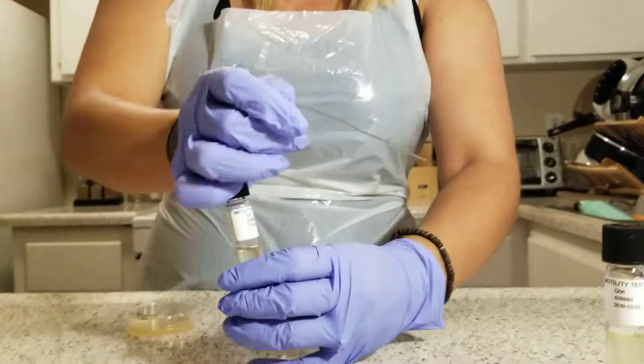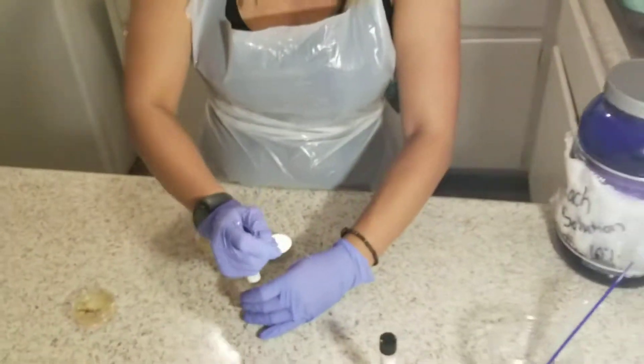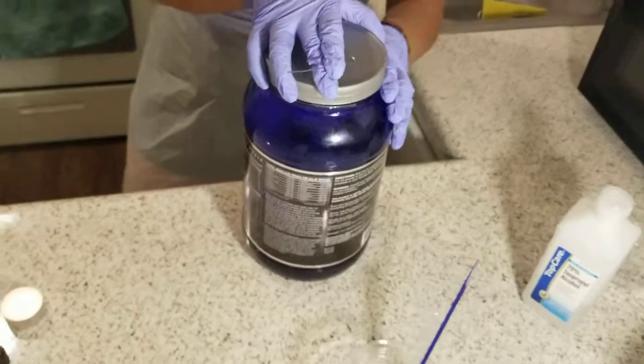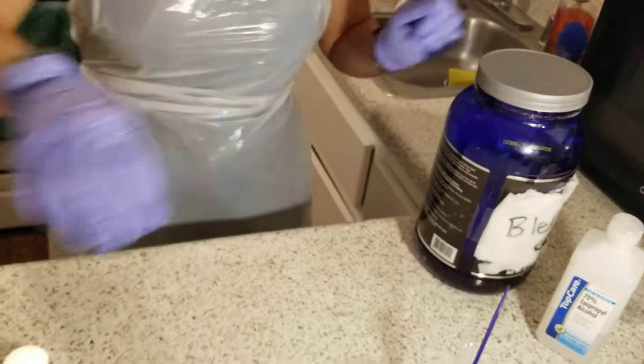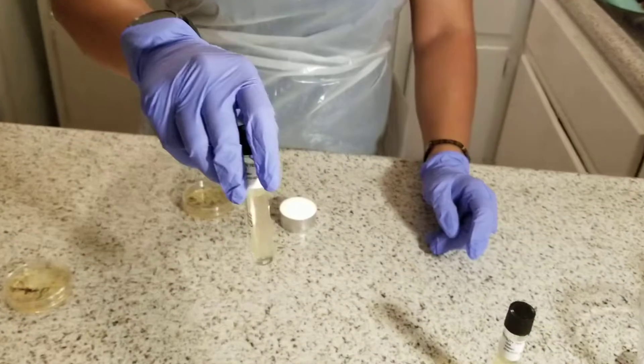I place my paper clip in the 10% bleach solution. Then I put my motility tube in the incubation location for 48 hours.